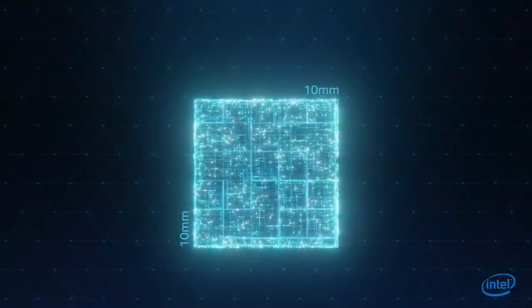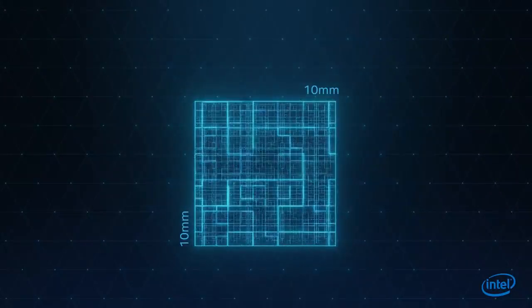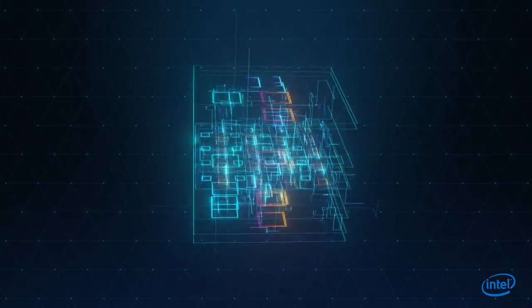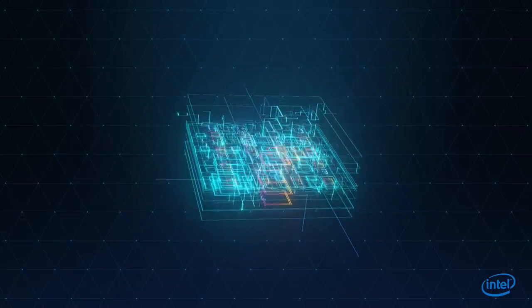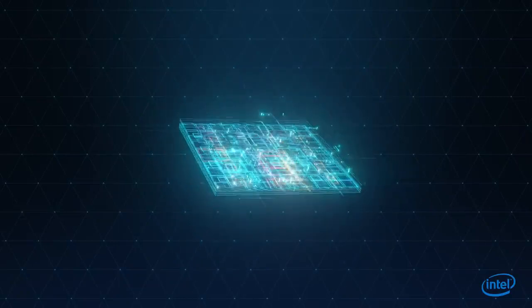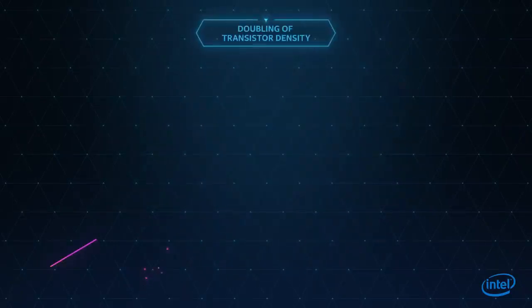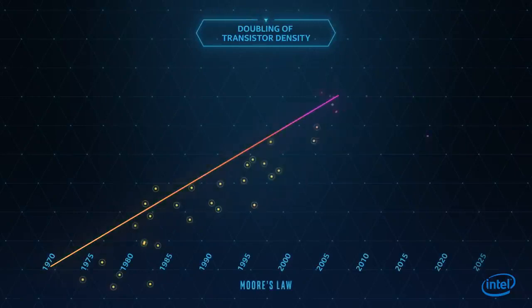To build a processor, billions of transistors are packed into an area no larger than a fingernail. It's one of mankind's most complex feats and a remarkable achievement that Intel has essentially doubled transistor density in every new generation of processors.